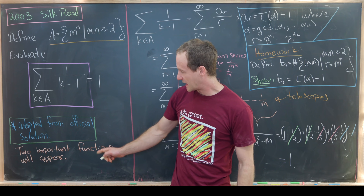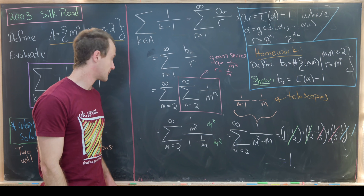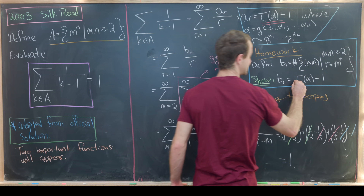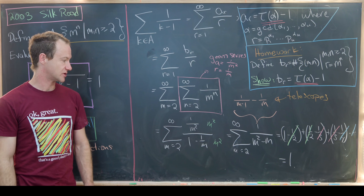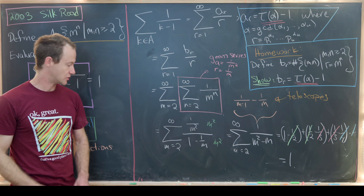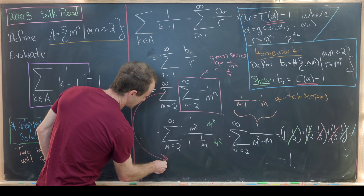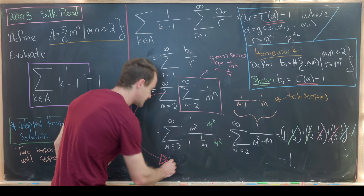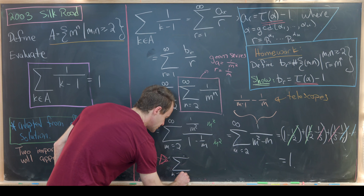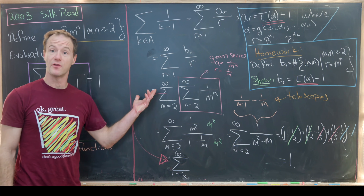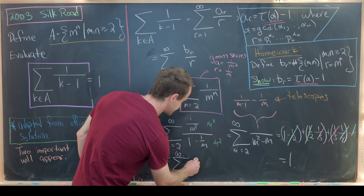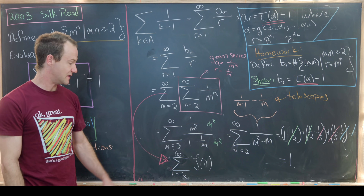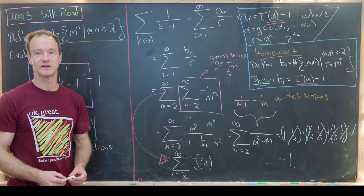Now let's look back at the earlier remark: I said two important functions would appear, but at the moment I only see the appearance of a single important function — tau, the number of divisors function. So where is the other important function? It turns out it's right here. If we change the order of summation, this double sum turns out to be the sum as n goes from 2 up to infinity of the Riemann zeta function evaluated at n, which we write as zeta(n). I did a previous video where I calculated the sum in this form, and I like how it shows up in this solution here. And that's a good place to stop.